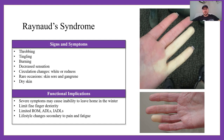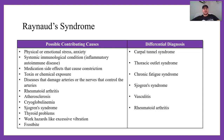Cold temperature can cause a Raynaud's attack — a brief period of little to no blood flow into the digits. Brief temperature changes can cause skin sores and eventually gangrene if you don't get out of that environment. Signs and symptoms include throbbing, tingling, burning, and decreased sensation. Functional implications: severe symptoms may cause inability to leave home in winter, limited fine finger dexterity, limited range of motion, difficulty with ADLs, lifestyle changes, secondary pain, and fatigue.